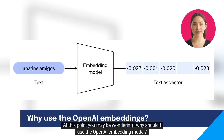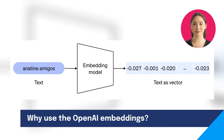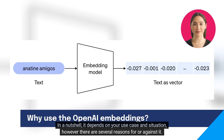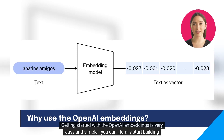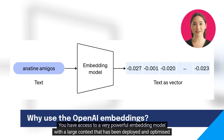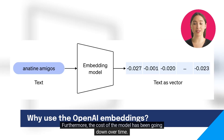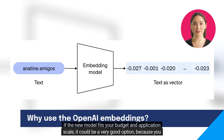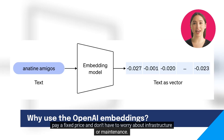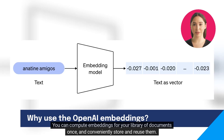At this point, you may be wondering: why should I use the OpenAI embedding model? In a nutshell, it depends on your use case and situation. However, there are several reasons for or against it. On the positive side, getting started with OpenAI embeddings is very easy and simple — you can literally start building in a few minutes. You have access to a very powerful embedding model with a large context that has been deployed and optimized for fast access by OpenAI. Furthermore, the cost of the model has been going down over time. If the new model fits your budget and application scale, it could be a very good option because you pay a fixed price and don't have to worry about infrastructure or maintenance. You can compute embeddings for your library of documents once, and conveniently store and reuse them.